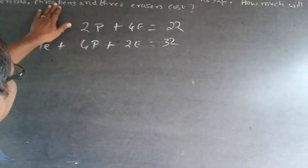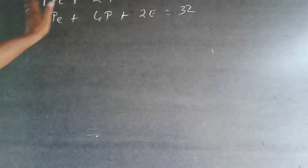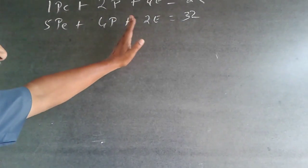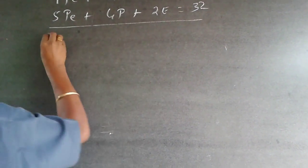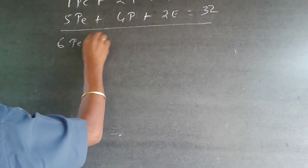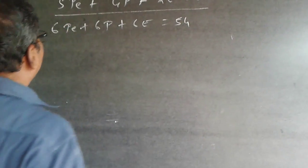So just by doing it, how to solve it as a problem? When you see it, everything when I add becomes six plus six plus six. So when I add both the equations, this will be six pencils plus six pens plus six erasers, which will be equal to 54.